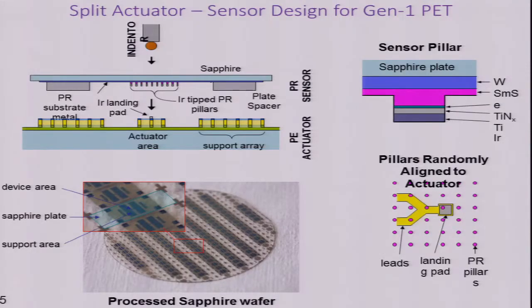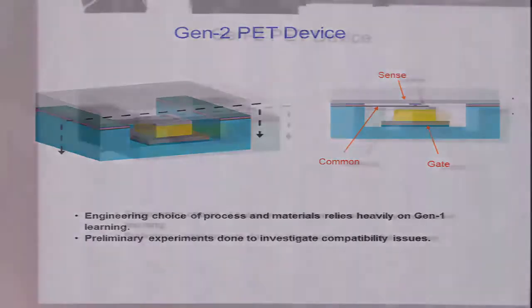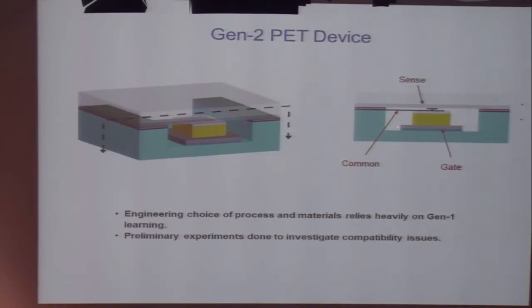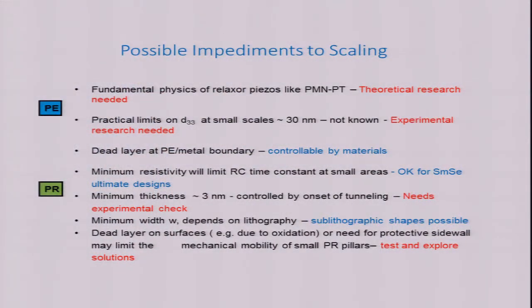The device we're currently building, the generation one device, is a hybrid. We build the actuating pillars on silicon, we build the PR pillars on sapphire, flip the sapphire plate, place it on top, compress it with an indenter and apply a gate voltage and you get a response. This is the next generation device which will be a fully integrated device. That's quite a challenge for the integrators. Here is a list of the possible impediments which I'll just leave you to read.